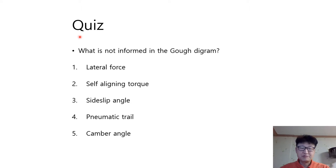This is a quiz for you. What is not informed in the GO Diagram? Number one, lateral pulse, self-aligning torque, side slip angle, pneumatic trail, and finally camber angle.